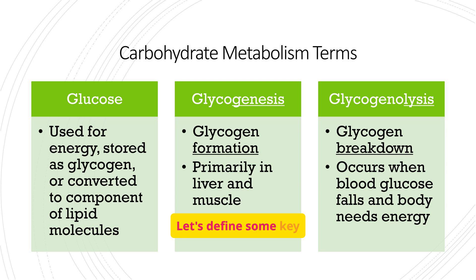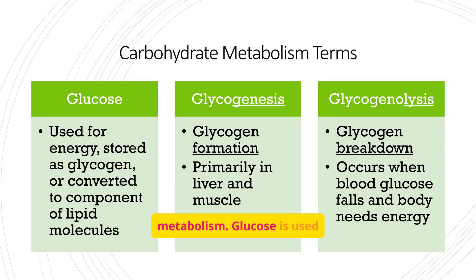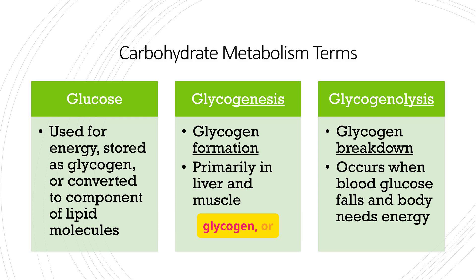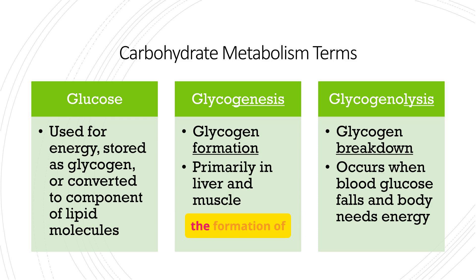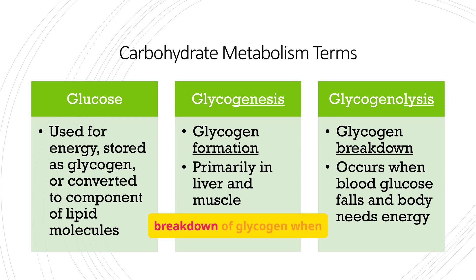Let's define some key terms related to carbohydrate metabolism. Glucose is used for energy, stored as glycogen, or converted into lipids. Glycogenesis is the formation of glycogen, primarily in the liver and muscle, while glycogenolysis is the breakdown of glycogen when blood glucose levels fall.